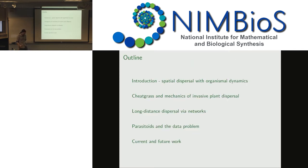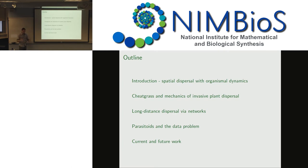Today I'll be talking about modeling invasions at multiple scales. This is a progression of work I've been doing since I was somewhere in the middle of writing my dissertation. A brief outline: spatial dispersal with organismal dynamics, starting with cheatgrass spreading over a large area in Rocky Mountain National Park, then thinking about networks on top of that, and then after my PhD, focusing on parasitoids and dispersal with sparse data at a smaller scale.